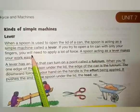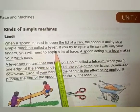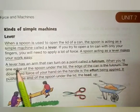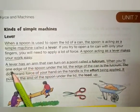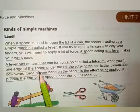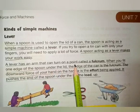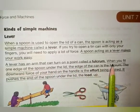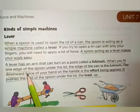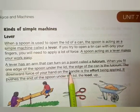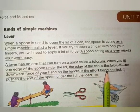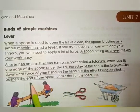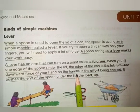When a spoon is used to open the lid of a can, the spoon is acting as a simple machine called a lever. A spoon acting as a lever makes your work easy. A lever has an arm that can turn on a point called a fulcrum. When you fit one edge of the spoon under the lid, the edge of the can is the fulcrum.